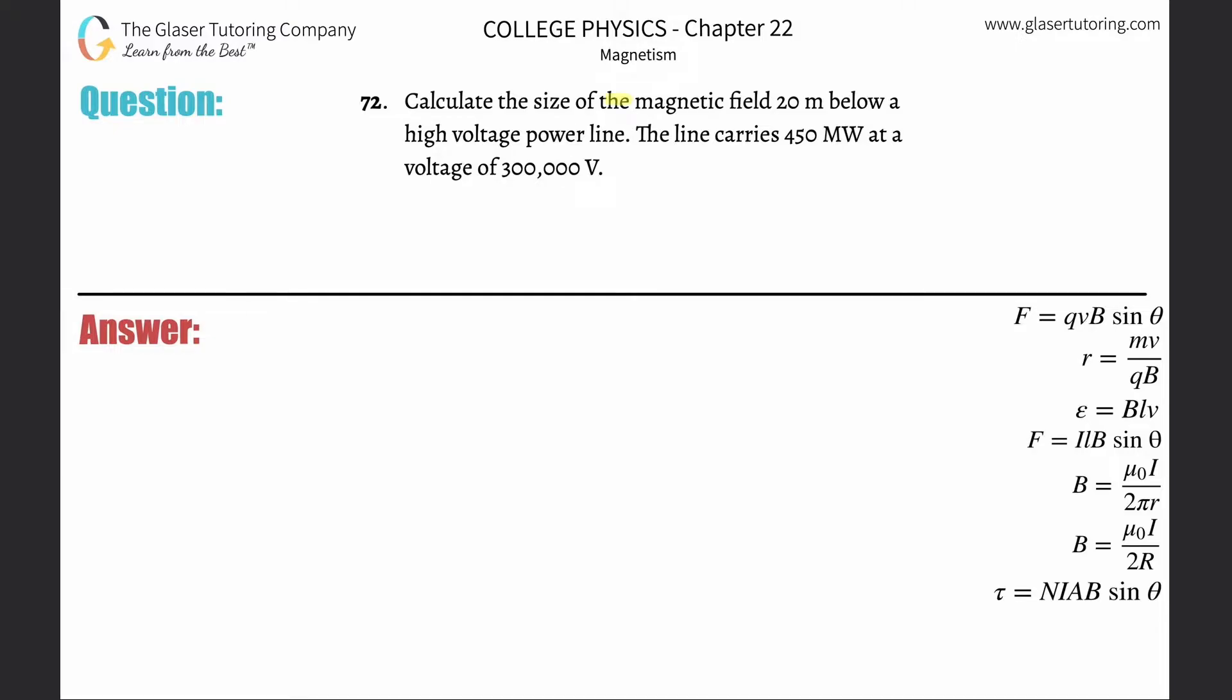Number 72: Calculate the size of the magnetic field 20 meters below a high voltage power line. The line carries 450 megawatts at a voltage of 300,000 volts. Alright, so pretend you got a little wire here. It has a certain current traveling through it, which is actually what we're going to need to figure out. 20 meters below here we're trying to find the magnetic field, so we're trying to find B.